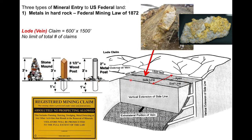When you file a claim and it's approved, you're required to stake out all of the corners of your claim and post signs indicating it is a registered mining claim. You can use stone mounds, wood posts, or metal posts. Once approved, you post your name and the federal claim number — no one else can then mine the vein at the surface or the extralateral part of the vein that extends at depth below someone else's surface claim. There is no limit to the total number of claims; you can file as many claims as you want for lodes or veins.